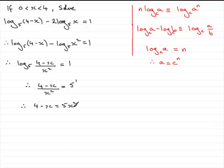And now I have a quadratic equation, which I need to rearrange to make it equal to 0. So what I'm going to do is add x and take 4 to both sides. So we have 5x squared plus x minus 4 equals 0.